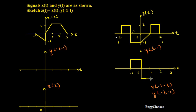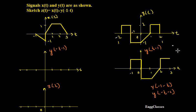To get the new limits, add 1 everywhere: 2 plus 1 becomes 3, and minus 2 plus 1 becomes minus 1. The shape of the signal remains the same — the only thing is it gets shifted to the right by 1. Here from minus 1 to 0 the amplitude is minus 1, then it continues with the same shape. This is our signal y(t-1).